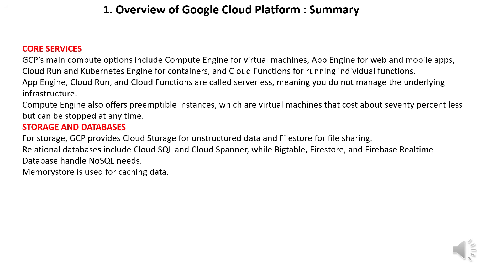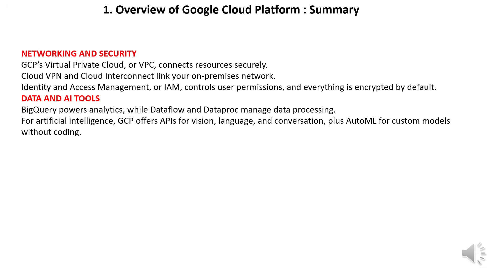Compute Engine also offers preemptible instances — virtual machines that cost about 70% less but can be stopped at any time. For storage, GCP provides Cloud Storage for unstructured data and Filestore for file sharing. Relational databases include Cloud SQL and Cloud Spanner, while Bigtable, Firestore, and Firebase Real-Time Database handle NoSQL needs. Memorystore is used for caching data.